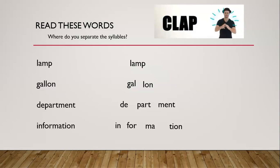After clapping the word lamp, you should come up with one syllable. What about gallon? You should have two syllables. And department, that comes in at three syllables. And our last word is information, which is four syllables.